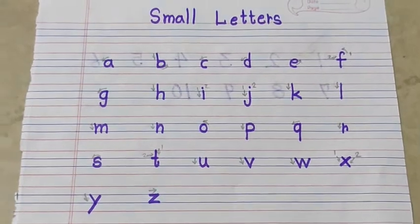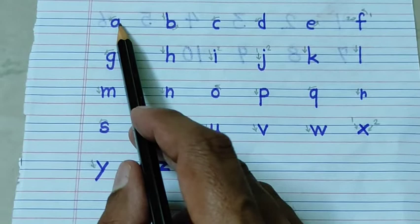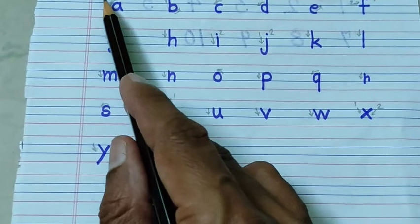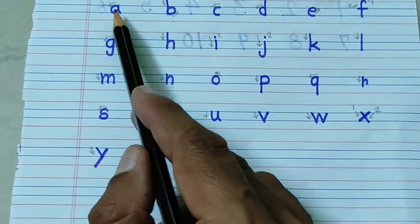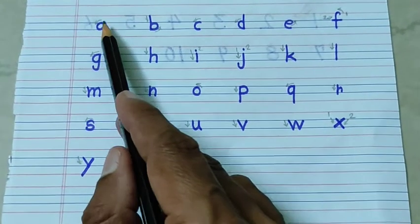In this video we also have small letters. In small letters, we use four lines. Of these four lines, the second and third lines are mainly used for writing small letters.